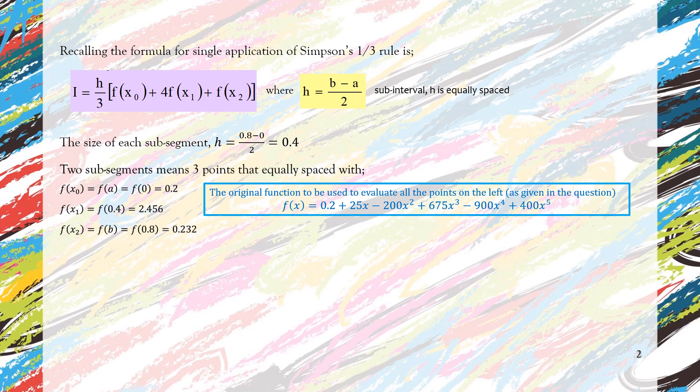We got those values by substituting x = 0 into the function to get f(x₀), then substituting x = 0.4 into the function to get f(x₁), and finally substituting x = 0.8 into the function to get f(x₂).